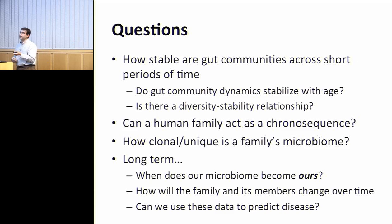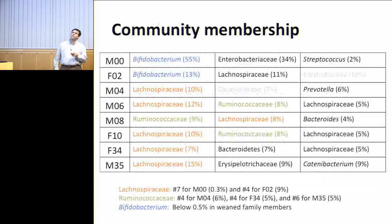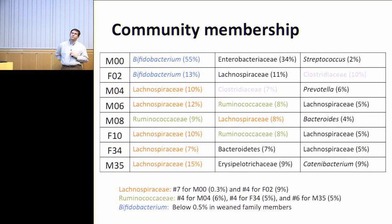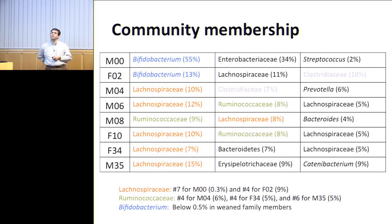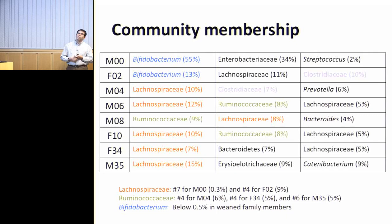Looking at the eight individuals — M for male, F for female, and the number is their age — and the three most abundant genera in each individual, we find that for the infant and the two-year-old who are both nursing, they both share a bifidobacterium population. But the weaned individuals and the parents were dominated by species of Lachnospiraceae, Ruminococcaceae, and some Clostridiales members. Interestingly, this Lachnospiraceae was found in all eight members of the family, even the exclusively breastfed infant. It appears there is some type of family signature, with many of these bugs shared across all family members.